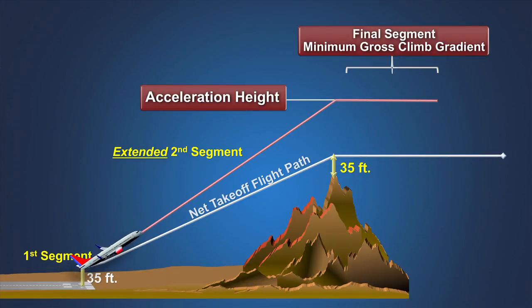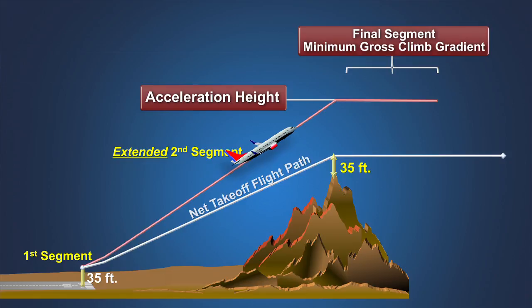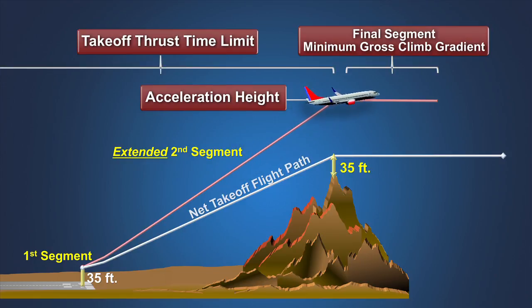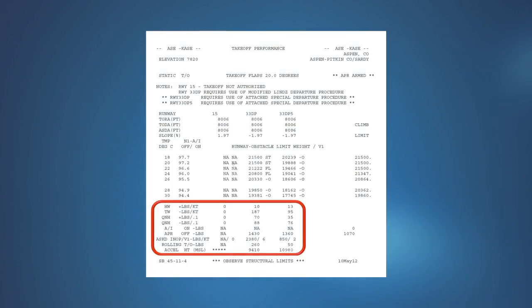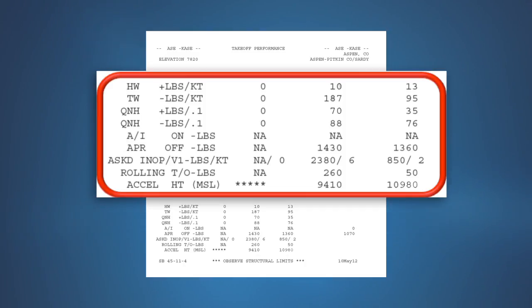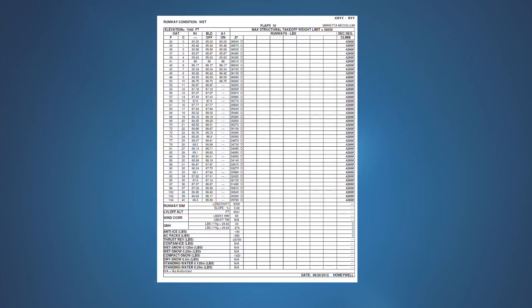Still other airplanes are capable of an extended second segment climb, where the airplane is assumed to continue climbing at V2 with takeoff flaps to the end of the takeoff thrust limit. The transition segment is then completed using maximum continuous thrust. To use this option, it must be demonstrated that the airplane is capable of meeting the minimum gross climb gradient requirement for the final segment at the designated acceleration height with takeoff flaps extended and maximum continuous thrust. Using data furnished in the AFM, the engineer determines weight limit additions or subtractions applied to the runway limit weight to account for headwind or tailwind component, non-standard atmospheric pressure, and engine bleed and ice protection configuration.